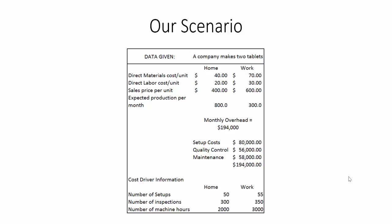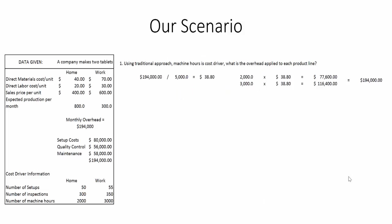Our first task is using the traditional approach, again using machine hours as a cost driver. In a traditional costing methodology, you typically use just one cost driver. We're assuming machine hours. To calculate the overhead applied to each product line, we take the entire overhead cost bucket of $194,000 and divide by 5,000 machine hours (2,000 plus 3,000), giving us a rate of $38.80.